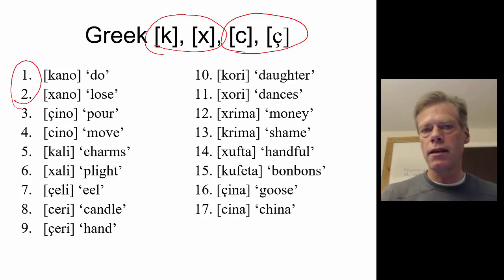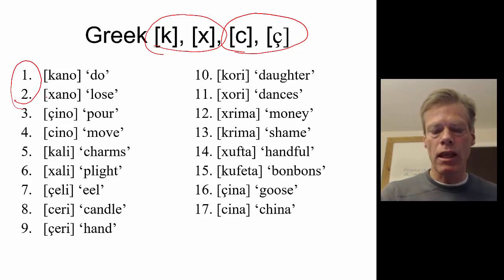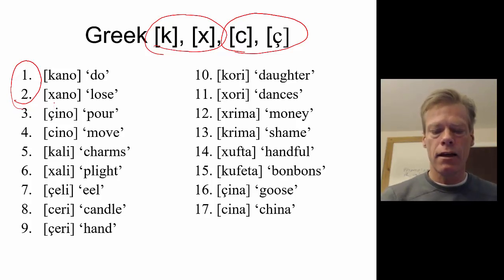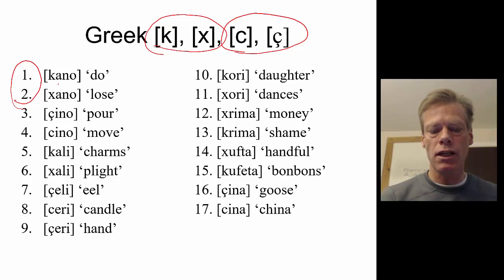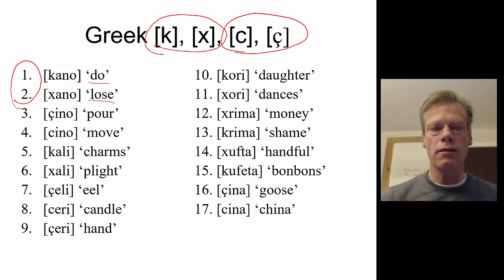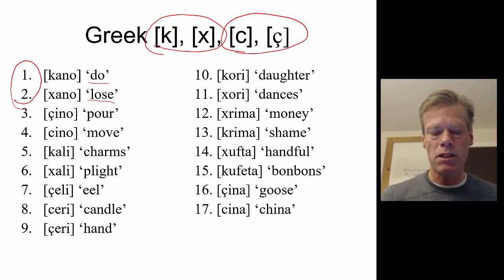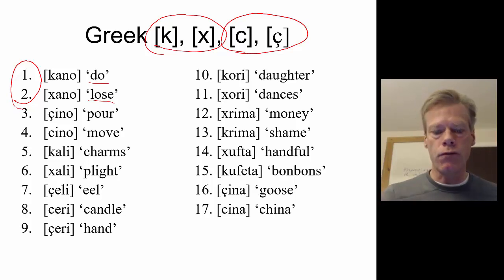We find that they are overlapping, and we find minimal pairs between the velar stop and the palatal stop. It's a minimal pair because they only differ in those two sounds and they mean different things. That means they are allophones of different phonemes.